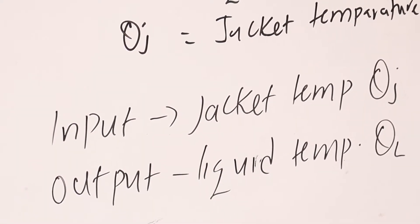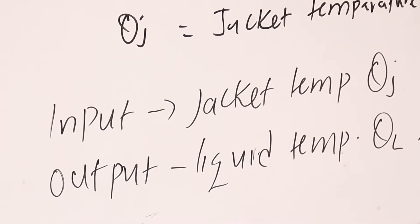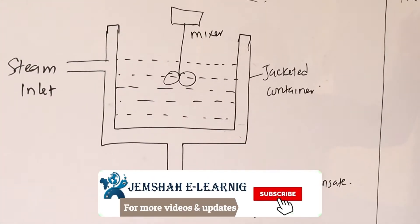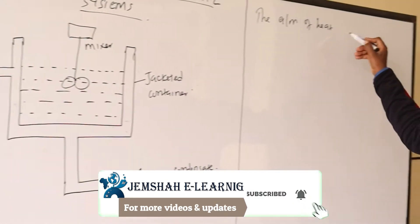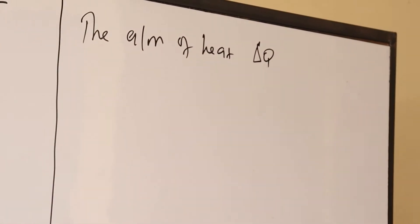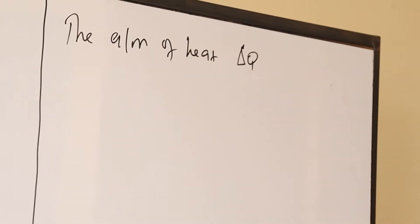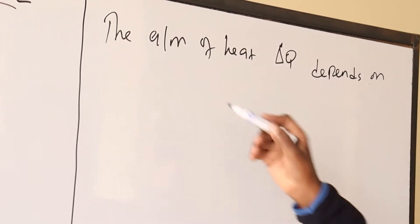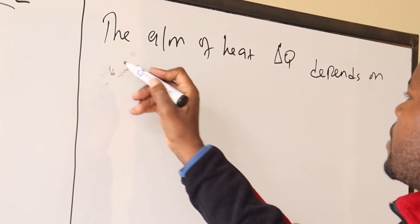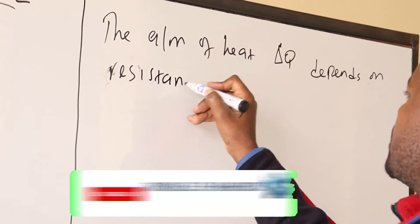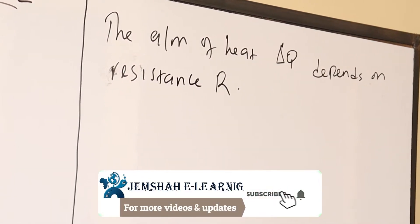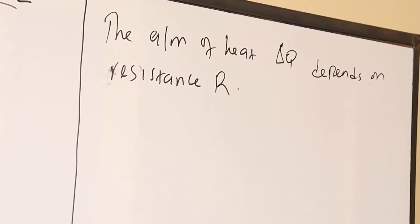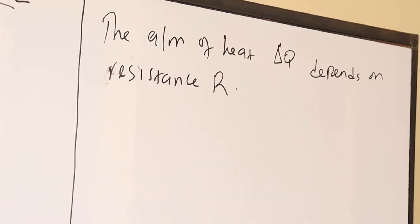From the equations of the heat balances, the amount of heat, delta Q, transferred to the liquid, depends on the resistance R. The resistance R is actually a result of the wall between the steam and the liquid.